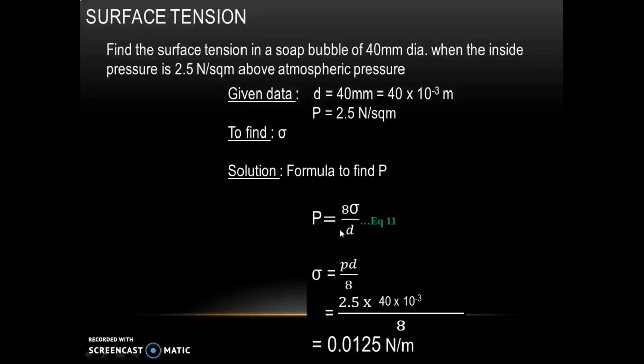The equation P = 8·sigma/D is used for a soap bubble. If it is a droplet, the formula changes to P = 4·sigma/D.